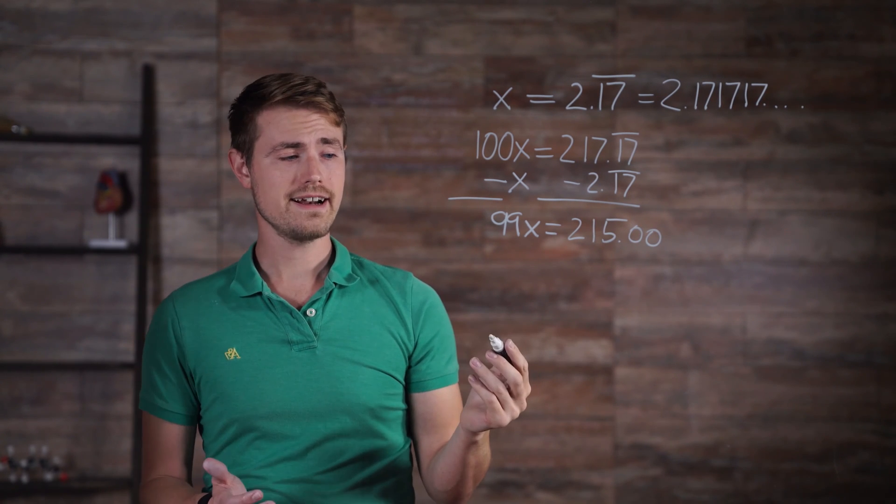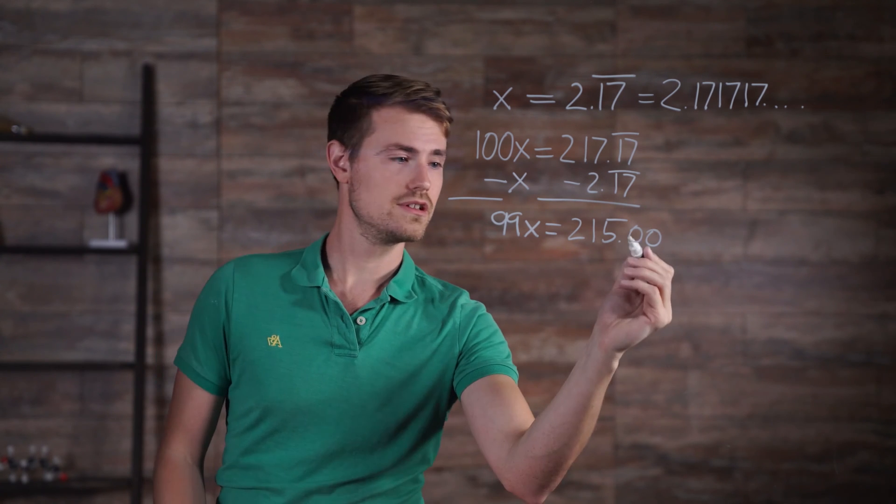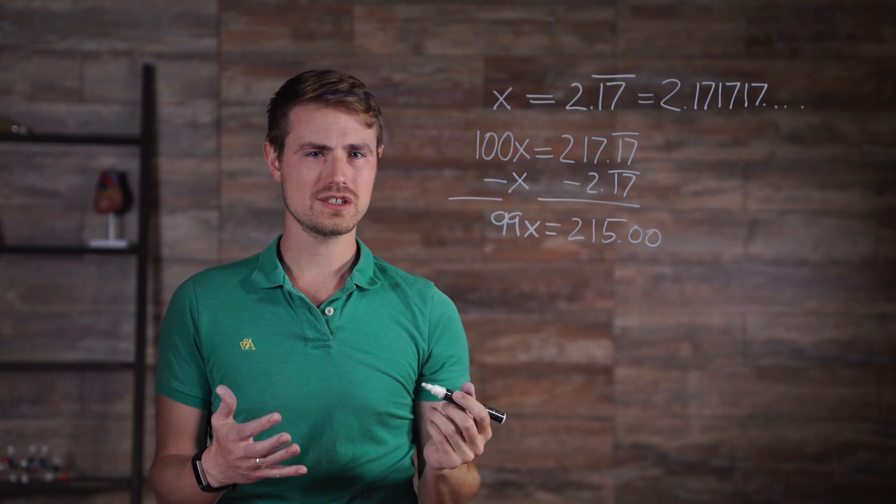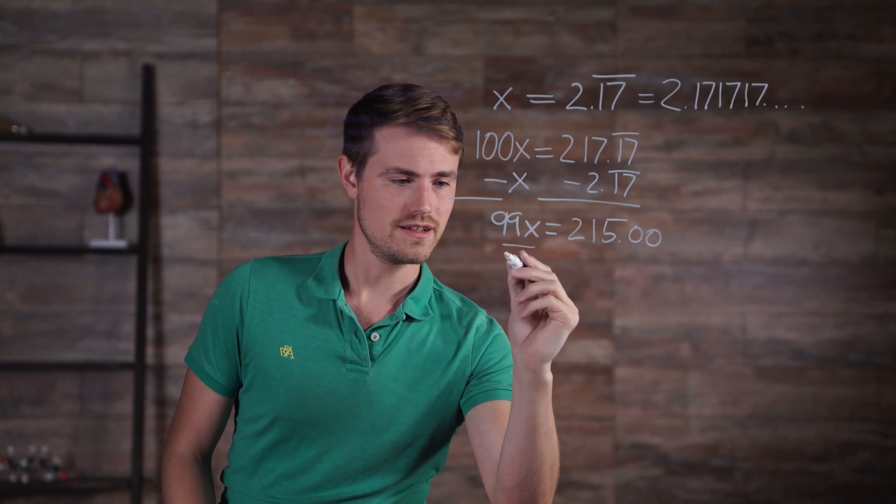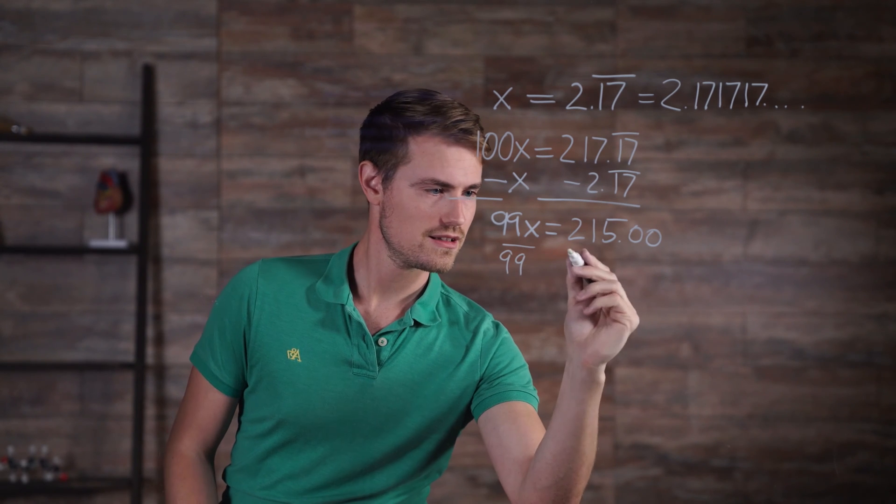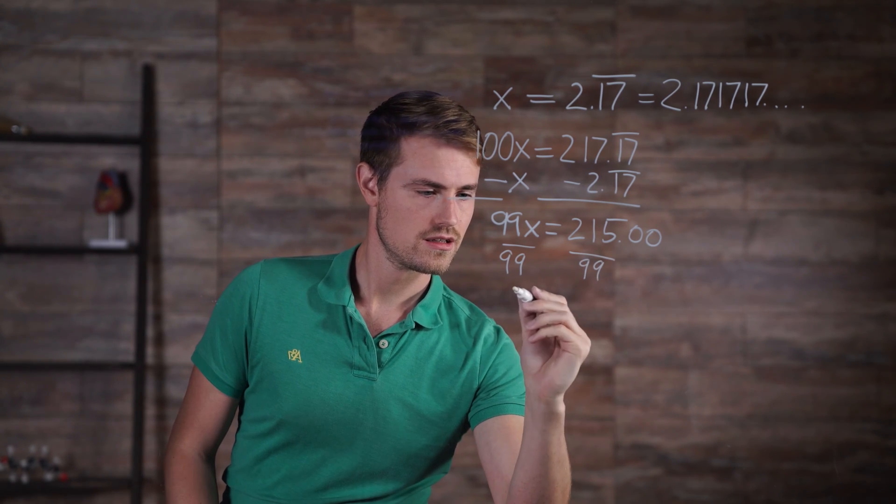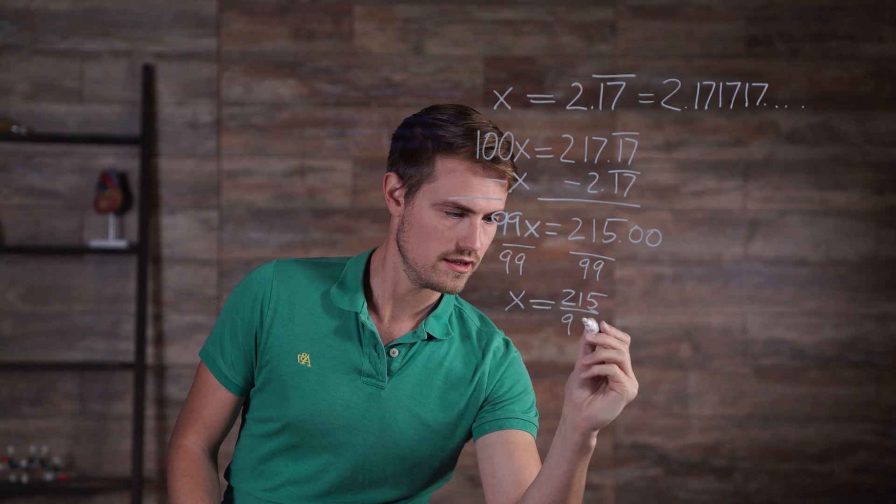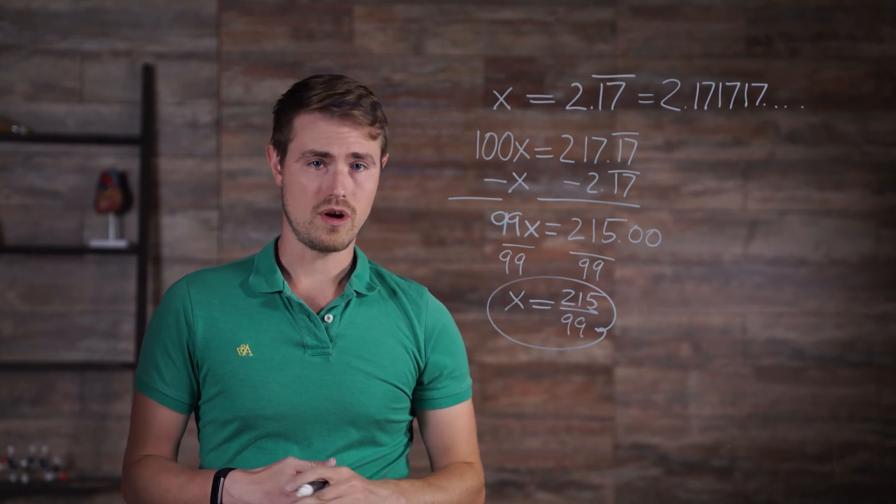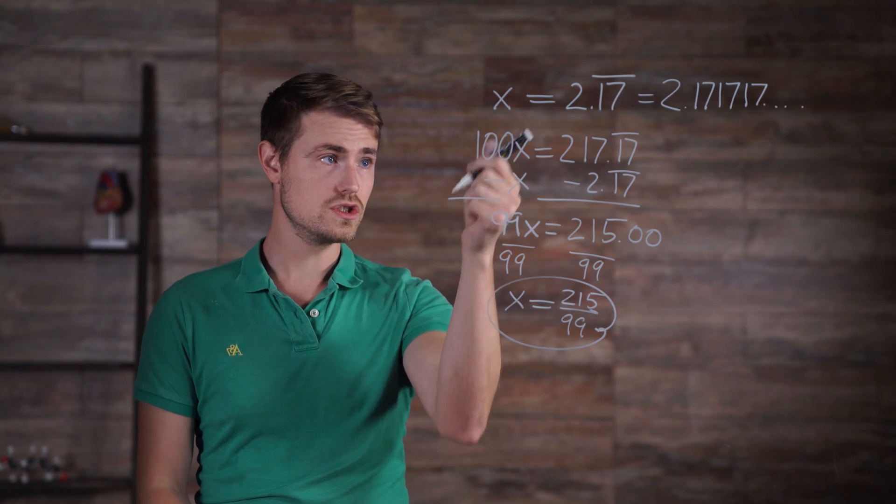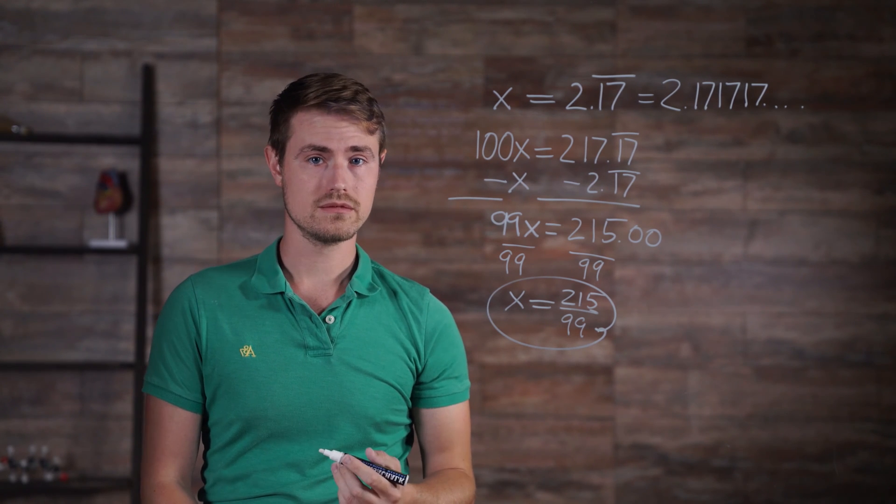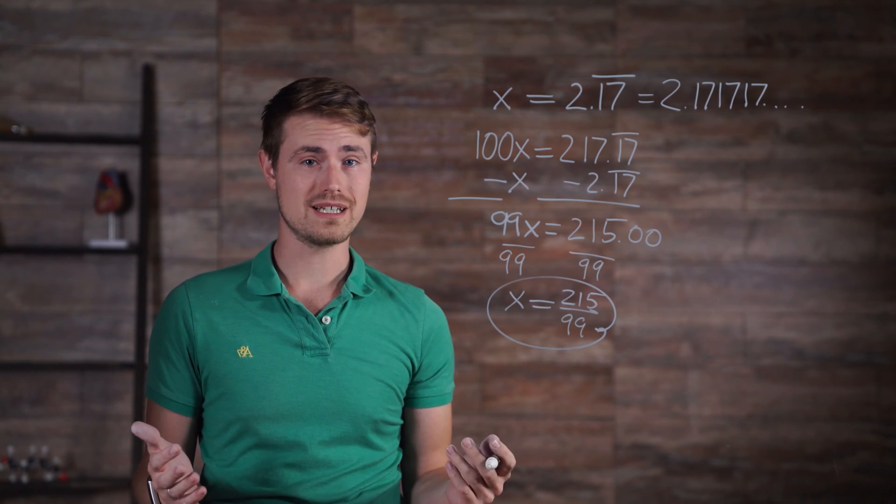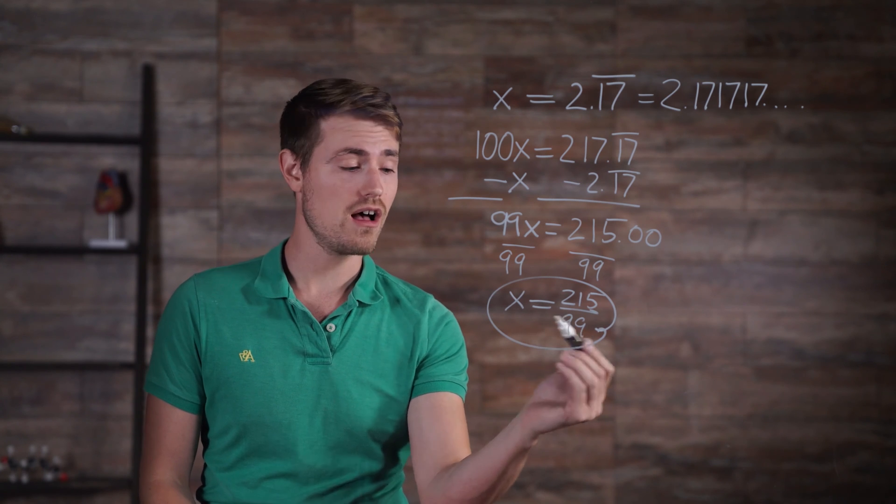So we have 99x is equal to 215. Notice that the repeating portion of the decimal is now eliminated. Solving for x results in dividing both sides by 99. x is equal to 215 over 99. This is a fractional representation of x equal to 2.17 repeating. This proof shows that repeating decimals are also considered rational because they can be written as a fraction of integers.